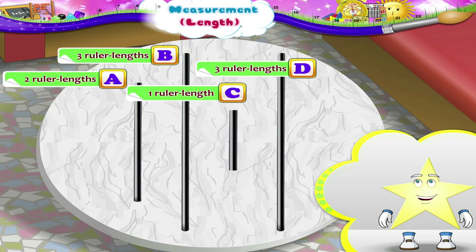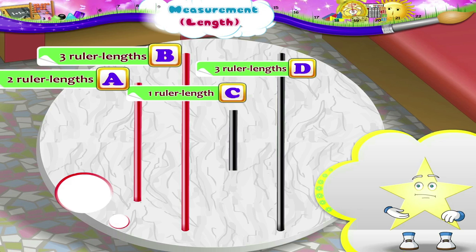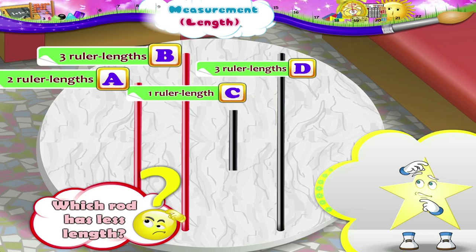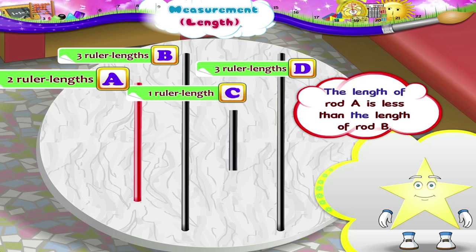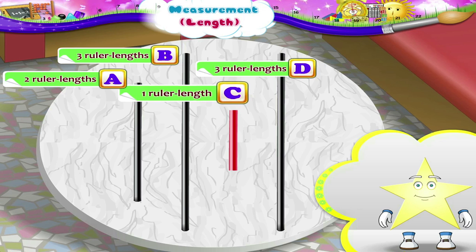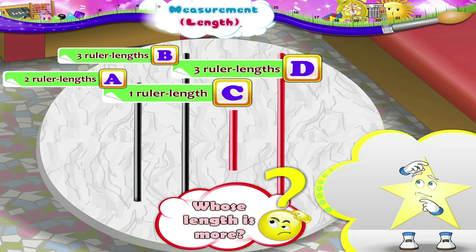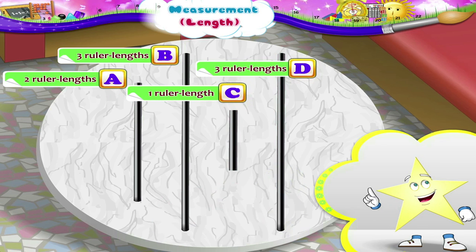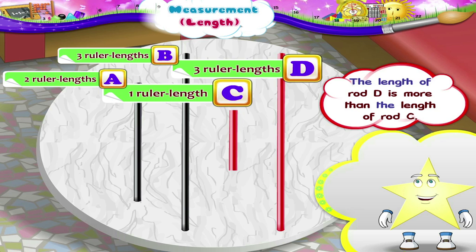Starry, out of rod A and rod B, which rod has less length? The length of rod A is less than the length of rod B. Out of rod C and D, whose length is more? The length of rod D is more than the length of rod C.